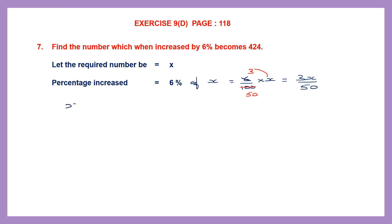So we write x, the original required number, plus 3x/50 equals 424. We need to find the LCM here because this is addition of fractions. We'll give x the denominator 1, so the LCM will be 50.